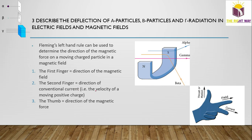In a magnetic field, the deflection of alpha and beta particles can be determined using Fleming's left hand rule. The first finger points in the direction of the magnetic field, the second finger in the direction of conventional current (direction of positive charge movement). For alpha particles, use the second finger for current direction and the thumb gives the force direction. For beta particles, find the direction as for alpha and then reverse it. Deflection occurs perpendicular to both the magnetic field and the direction of motion.